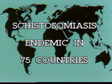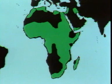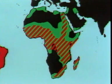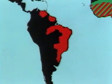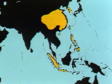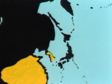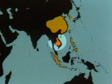Schistosomiasis is currently endemic in 75 countries. Haematobium is present in 53 countries, mostly in Africa but also in the eastern Mediterranean. Mansonii shows a similar distribution except that it's also found in South America, notably Brazil, where it was probably carried with the slave trade. Japonicum on the other hand is confined to countries of the Far East — China, Indonesia, and the Philippines — though Japan, where the parasite was originally found, has now been freed from the disease. Mekongai occurs in South-East Asia, and intercalatum is found in Central and West Africa.